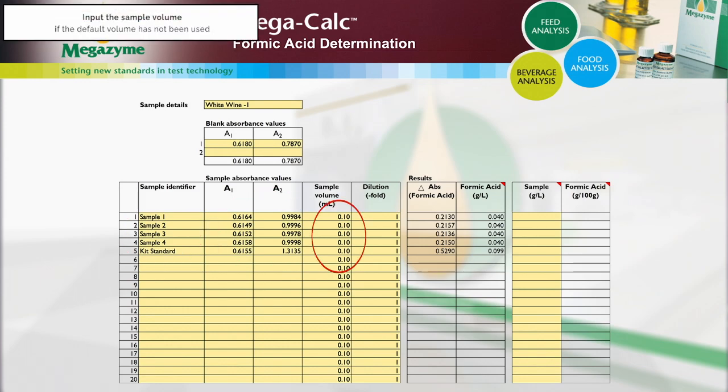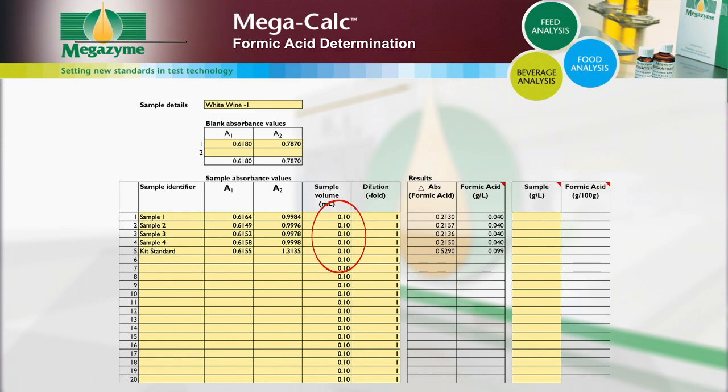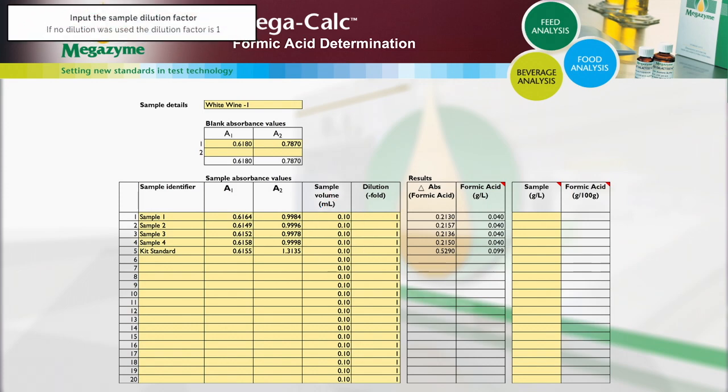Alter the sample volume if a volume other than the default 0.1 millilitres is used. If dilution of the sample has been performed, then input the dilution factor used. If no further dilution was performed, the dilution factor is 1.